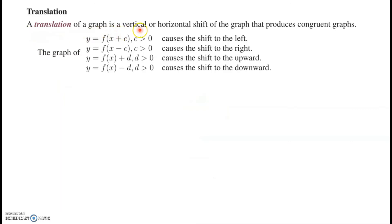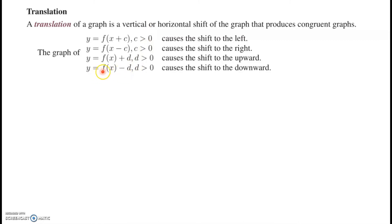A translation of a graph is a vertical or horizontal shift of the graph that produces congruent graphs. If y = f(x+c) where c > 0, it causes a shift to the left. Similarly, y = f(x−c) causes a shift to the right. If y = f(x)+d, it causes an upward shift, and y = f(x)−d causes a downward shift.